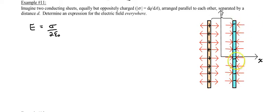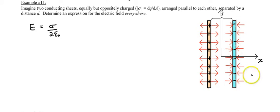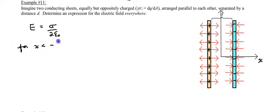Now what we're going to do is apply the principle of superposition as we look in the region in between the two plates, and then the region to the right of the two plates. So let's look at the region to the left, where x is less than negative d over 2, because this distance right in here is half of d.